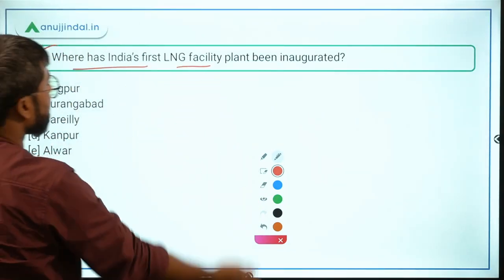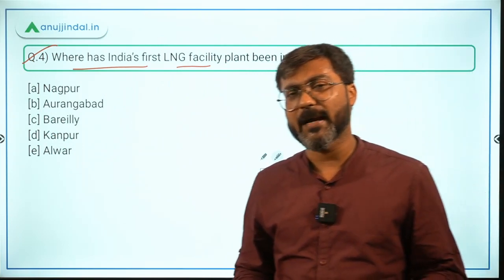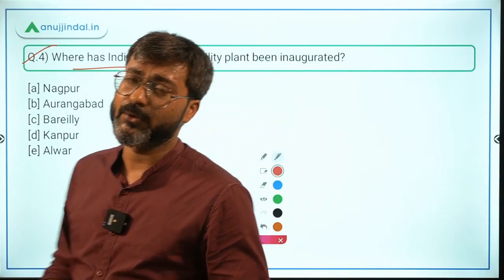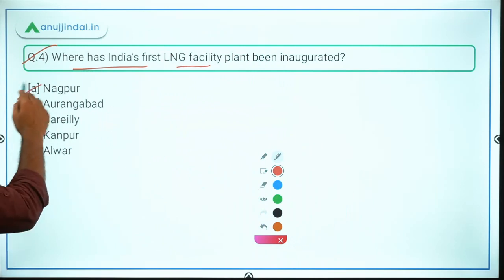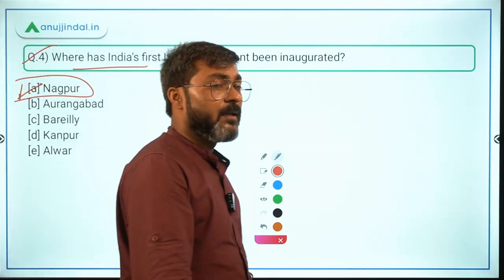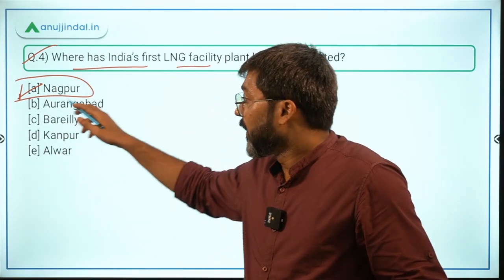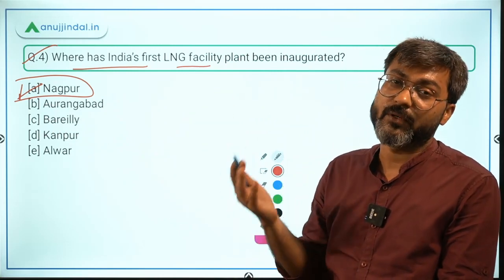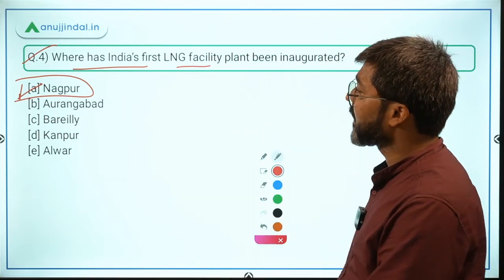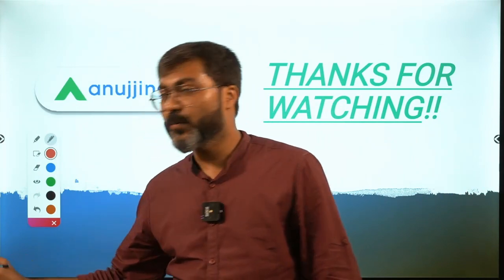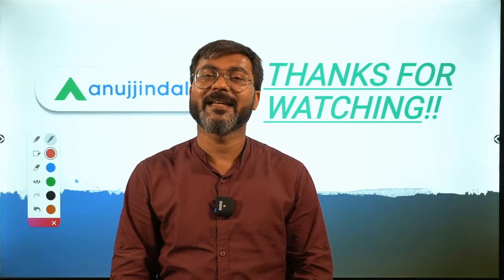Question 4: Where has India's first LNG facility plant been inaugurated? It's not a very important question but given the RBI exam pattern, it can appear for one mark. India's first LNG facility plant has been inaugurated at Nagpur, Maharashtra — the Lok Sabha constituency of Nitin Gadkari, Minister of Road Transport and Highways. So Nagpur is the correct answer. That's it for today's session — if you have any doubts, ask in the comment section. Thank you, goodbye, take care and God bless.